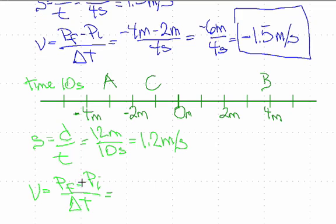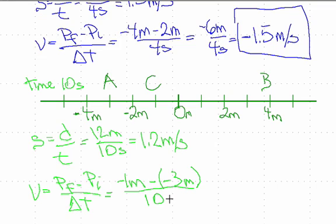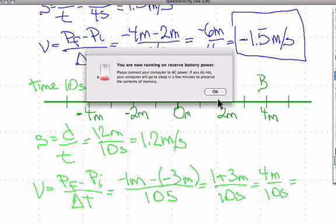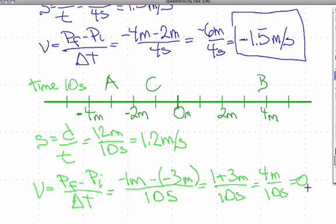Now for velocity, which is final minus initial: our final position is minus 1 meter, and our initial position is minus 3 meters, over 10 seconds. Minus 1 minus minus 3 is a plus, so that's plus 2 — wait, minus 1 minus minus 3 equals positive 2 meters... actually that's 1 plus 3 equals 4 meters over 10 seconds, giving us 0.4 meters per second.